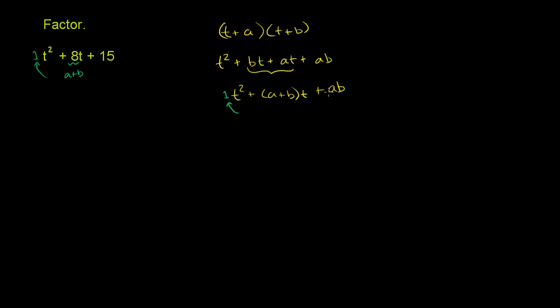And then finally, our constant term, ab, that could be 15. So if we wanted to factor this out, we just have to find an a and a b where their product is 15 and their sum is 8.